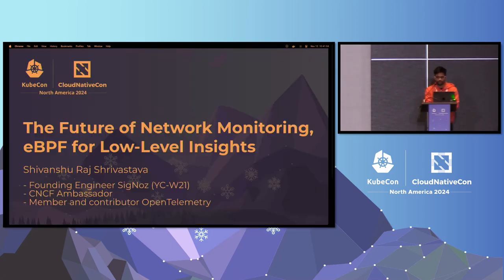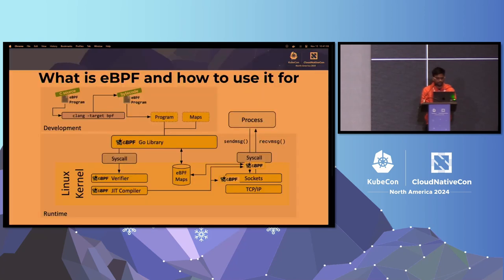Today, we are going to talk about how you can use eBPF for low-level network monitoring. So let's take a look at what eBPF is on a very high level. What you can do is you can program the kernel. For example, if you want to instrument a process, get the relevant data, put it into the eBPF maps, and then do some correlation on top of those maps.